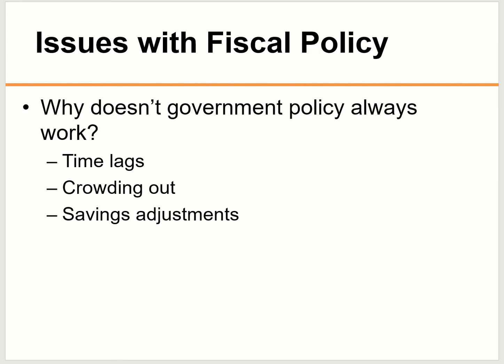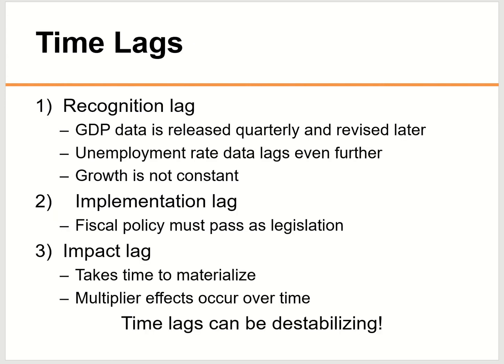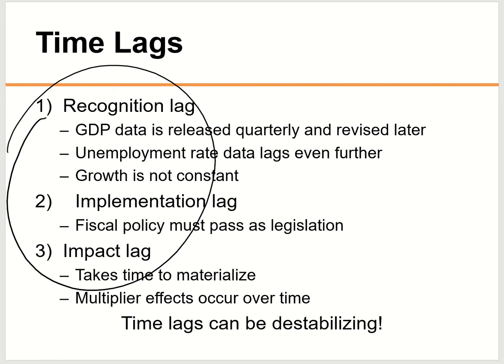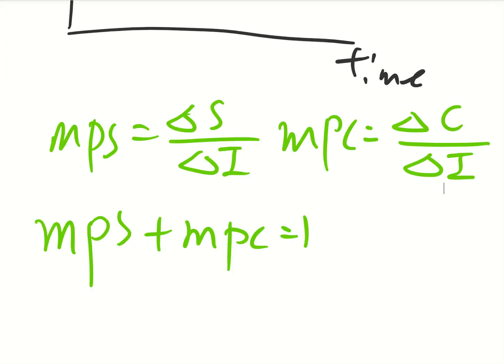Fiscal policy is not perfect. There are three problems, and the first is the timing lag — fiscal policy is slow. There are three parts to this lag. First is recognition lag: it takes some time for the government to recognize the problem. Second is implementation lag: it takes time for the policy to pass through Congress. Third is impact lag: it takes time for the policy to actually have an impact on the economy once the law is passed. All three lags slow down the delivery of fiscal policy, and sometimes these lags can make the economy even worse.